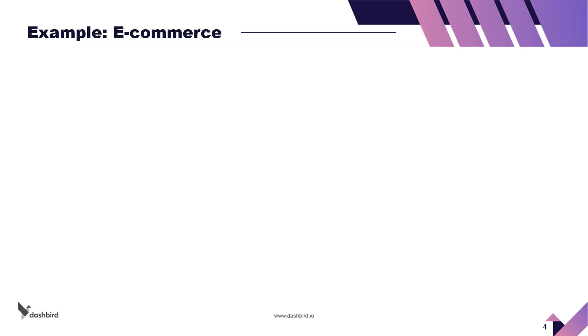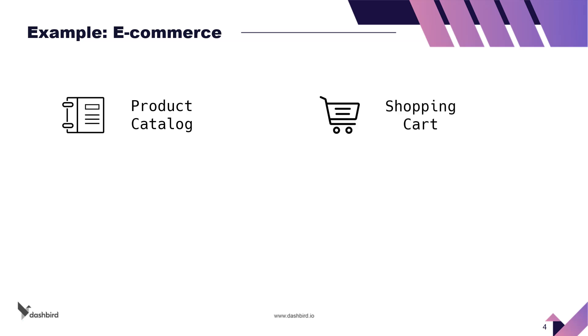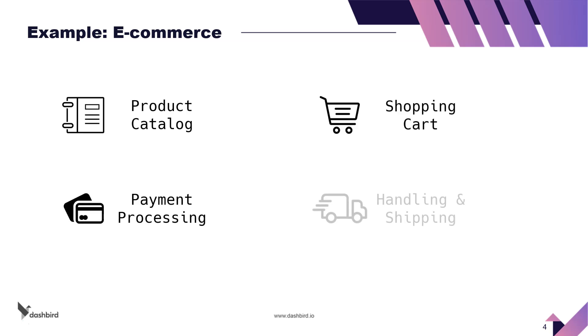Let's start with an example. Consider an e-commerce backend system with the following features: a catalog, shopping cart, payment and shipping — just a very simple e-commerce.